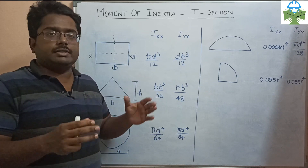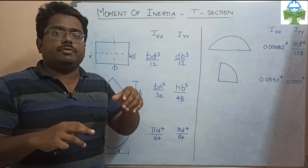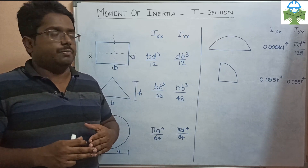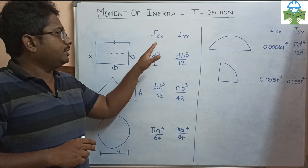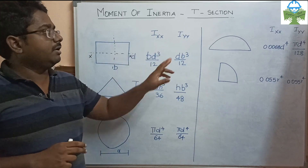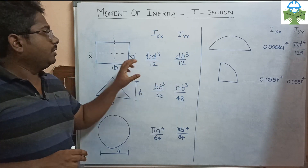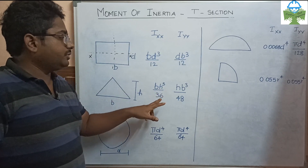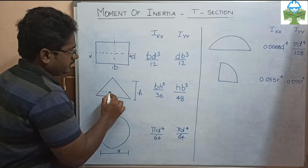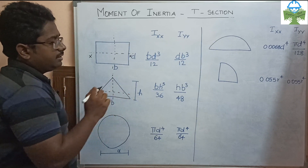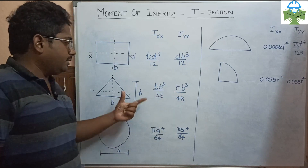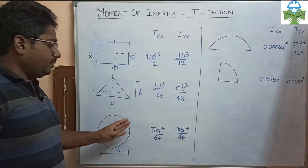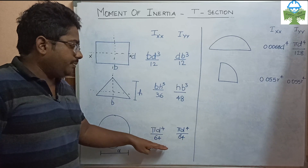For a rectangle, bd³ by 12 is the moment of inertia. But if we study a composite structure, there is a section with flanges. For the rectangle, the first formula is bd³ by 12; for the YY axis it is db³ by 12. For a triangle, the moment of inertia about the centroid is bh³ by 36, and Iyy is hb³ by 48.